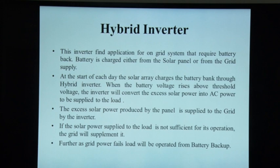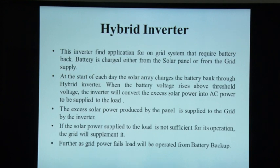A hybrid inverter is used for on-grid systems that require battery backup. The battery is charged either from the solar panel or from the grid supply. The solar array charges the battery bank; when battery voltage rises above the threshold, excess solar power is converted to AC for the load and any surplus is fed to the grid. If solar power is insufficient, the grid supplements it, and if the grid fails, the load is operated from battery backup.